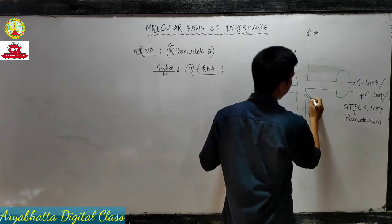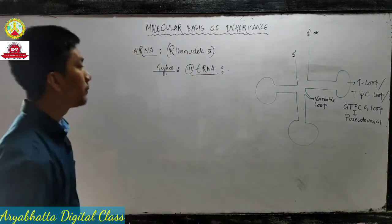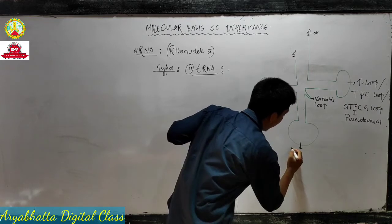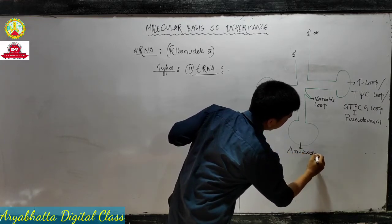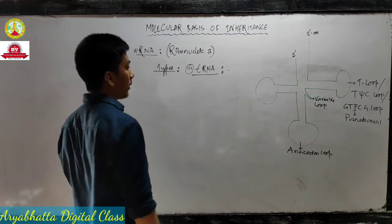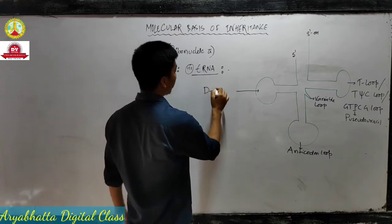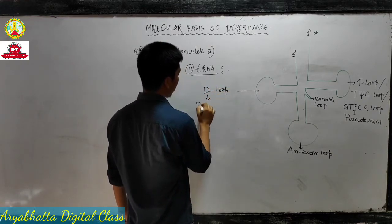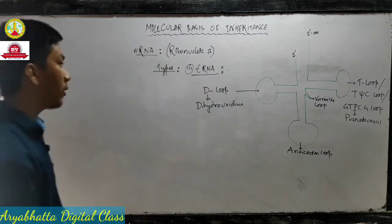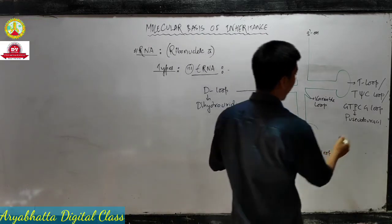This small structure we call the variable loop. The structure at the bottom we call the anti-codon loop. On the left side of the diagram, the laddu-like structure we call the D loop, and D stands for dihydrouridine loop.